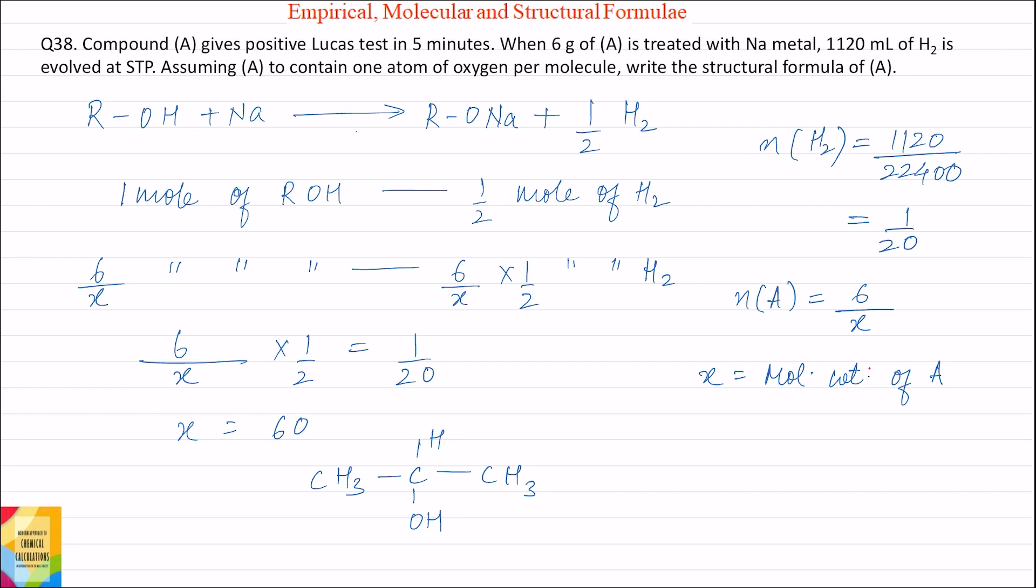Question 38. Compound A gives positive Lucas test in 5 minutes. When 6 grams of A is treated with sodium metal, 1120 mL of hydrogen is evolved at STP. Assuming A contains one atom of oxygen per molecule, write the structural formula of A.